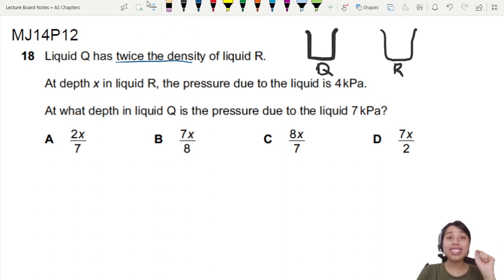Sorry, density symbol must use rho. Q is 2 times of rho R.